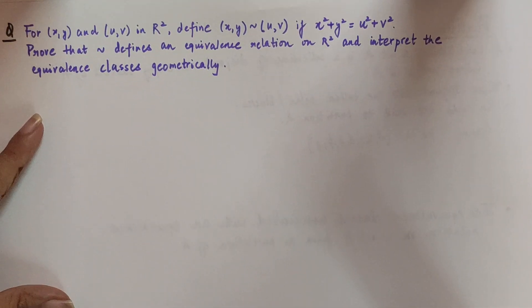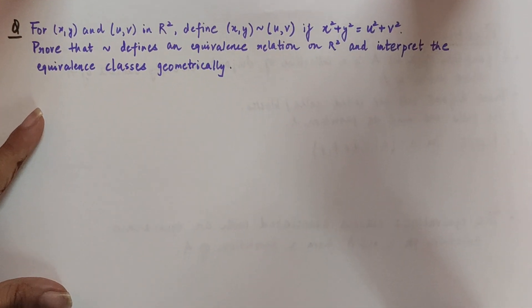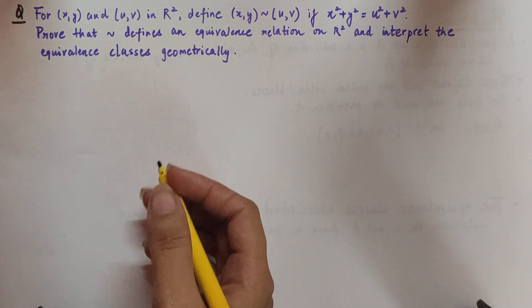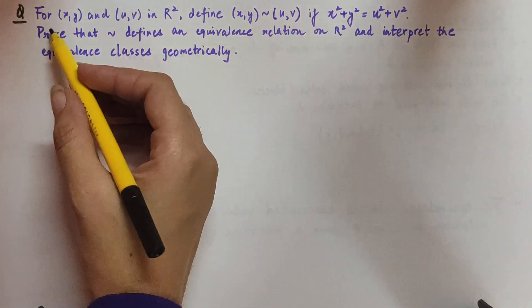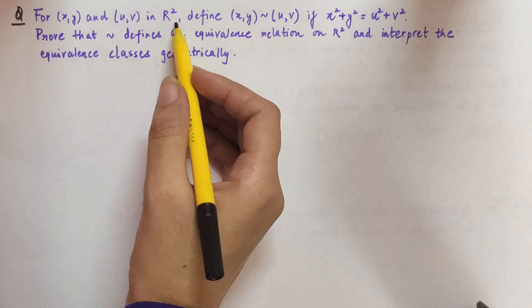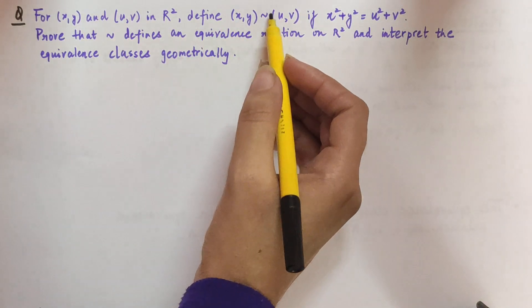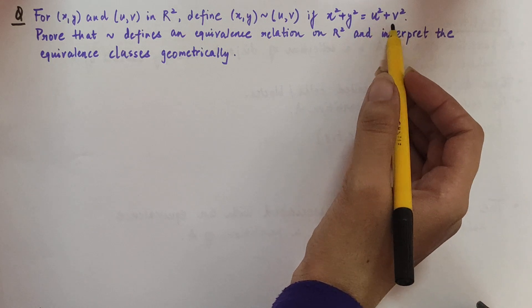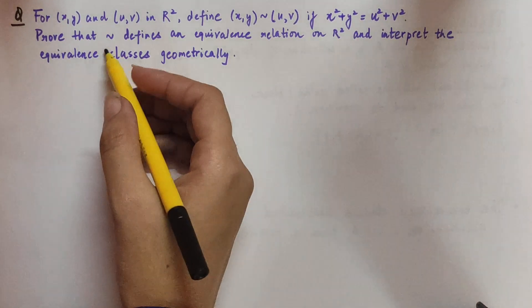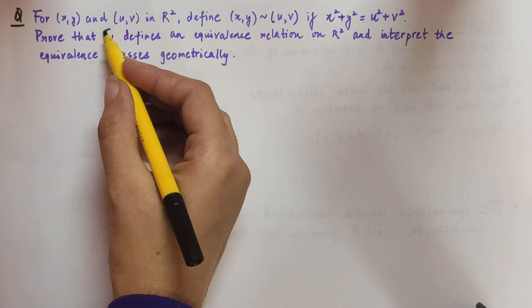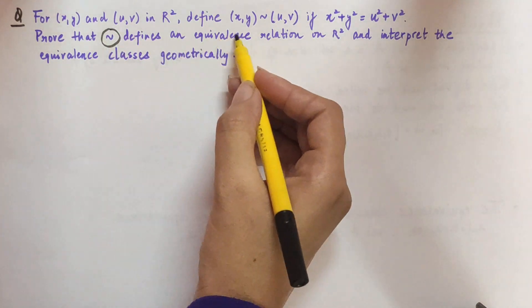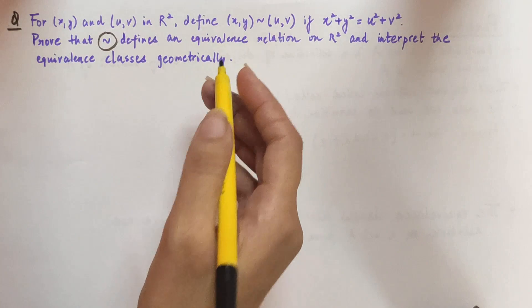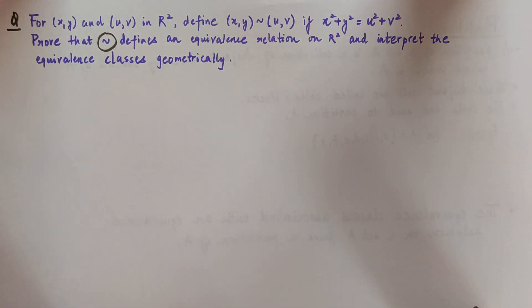Now let's move on to another question, which is quite interesting. For x, y and u, v in R², define (x, y) ~ (u, v) if x² + y² = u² + v². Prove that this relation defines an equivalence relation on R², and interpret the equivalence classes geometrically.